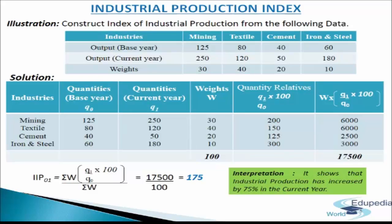In the fifth column we write the quantity relatives Q₁/Q₀ × 100: 250/125 × 100 = 200; 120/80 × 100 = 150; 50/40 × 100 = 125; 180/60 × 100 = 300. In the last column we write W × (Q₁/Q₀ × 100): 200 × 30 = 6000; 150 × 40 = 6000; 125 × 20 = 2500; 300 × 10 = 3000. Adding these up gives 17,500.